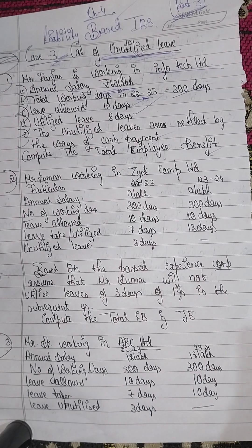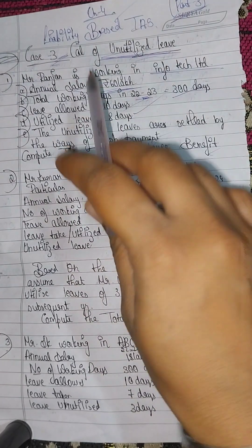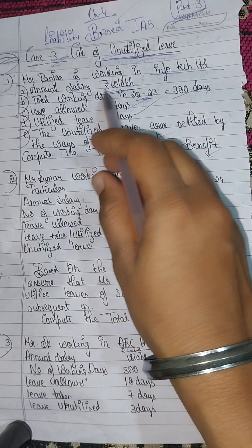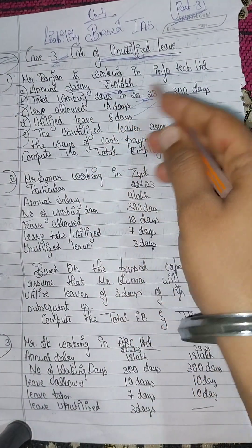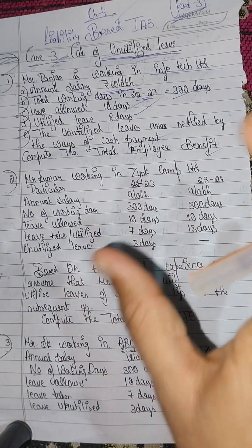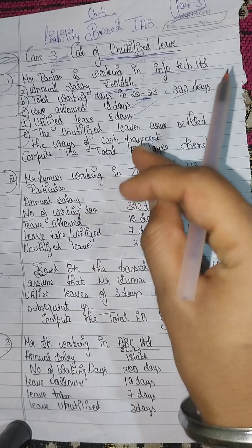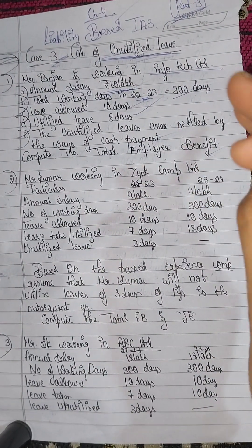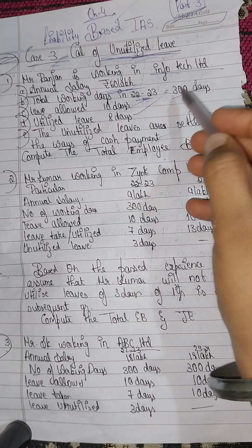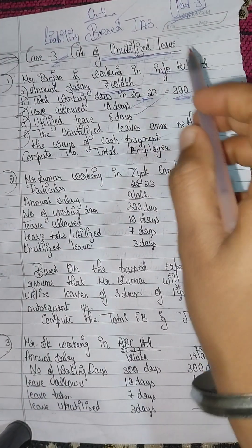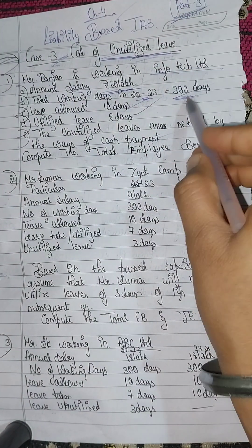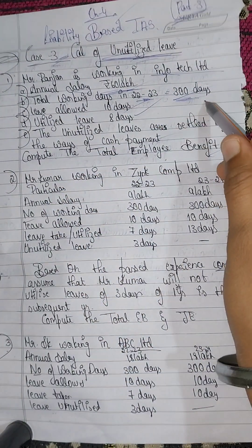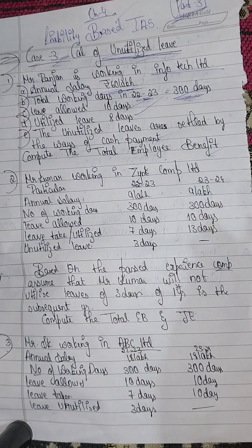So for Infotech Limited, the annual salary is 60 lakhs. The number of total working days is 300 working days. Leave allotted is 10 days.